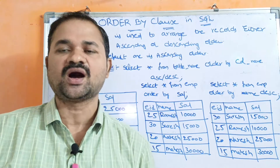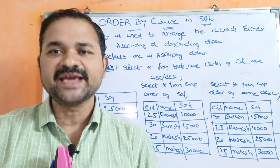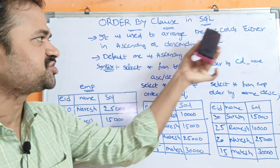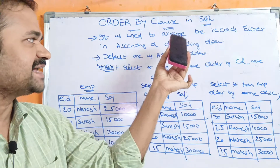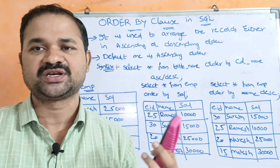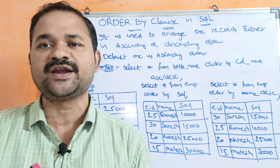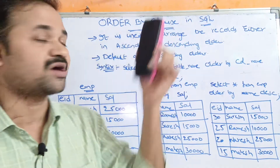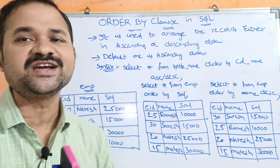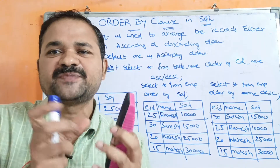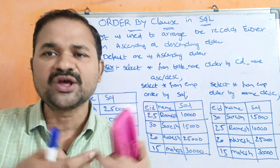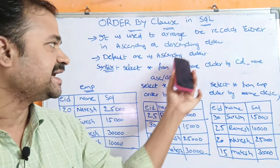Now let us discuss about the ORDER BY clause in SQL. The ORDER BY clause is used to arrange records either in ascending or descending order. So if you want to arrange the records in ascending or descending order, then we have to use this ORDER BY clause. The default is ascending order — if you don't specify ascending or descending, then by default all the rows will be arranged in ascending order.